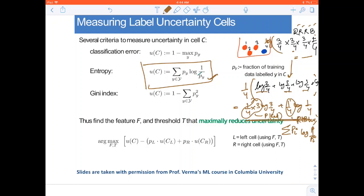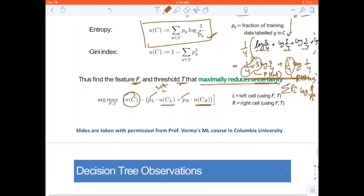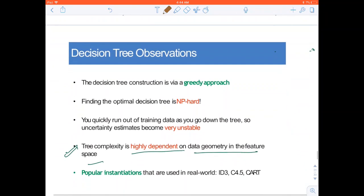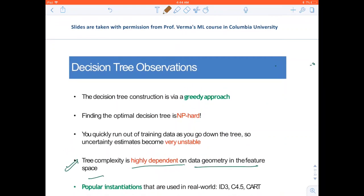Putting it mathematically, we need to find the feature and the threshold that reduces the uncertainty. If earlier the uncertainty was uc, now the uncertainty of left cell plus uncertainty of right cell multiplied by some weighting of the left cell and some weighting of the right cell.